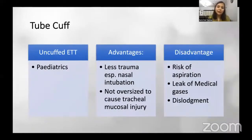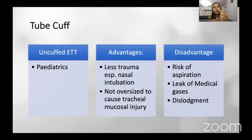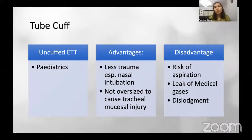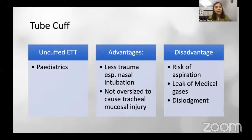Tubes can also be divided into cuffed and uncuffed types. Uncuffed tubes are mostly used in pediatrics, though cuffed pediatric tubes now exist as well. The advantage of uncuffed tubes is less trauma — the smooth PVC surface prevails with no rough cuff surface, especially beneficial in nasal intubation. They are also never oversized and don't cause tracheal mucosal injury. The disadvantage is a high chance of aspiration.